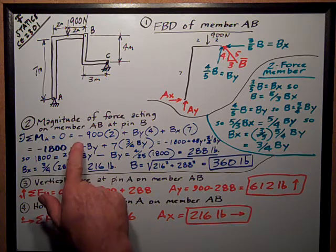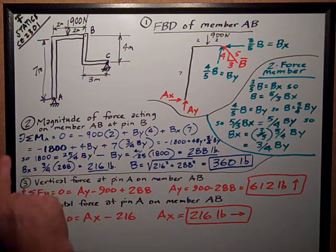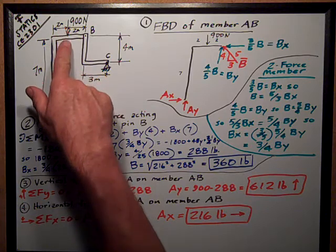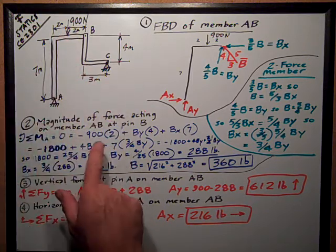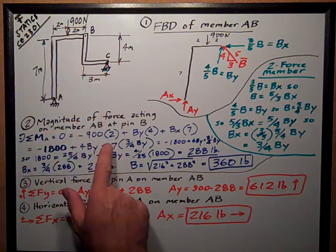The moment, I've assumed counterclockwise is positive, is negative 900 because it's trying to rotate clockwise about point A, times its moment arm of 2 meters.